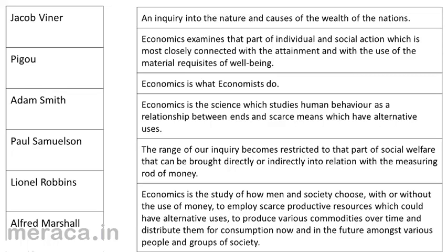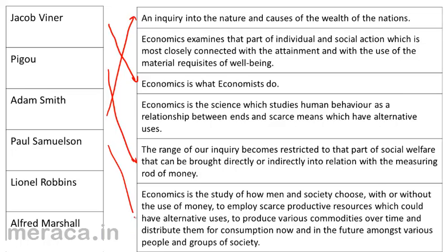Jacob Wiener gave the simplest definition you could get in economics — he said economics is what economics is. Pigou gave the measuring rod of money definition. Adam Smith gave an inquiry into the causes and nature of the wealth of nations. Paul Samuelson gave the growth and development definition. Lionel Robbins gave the choice making definition.